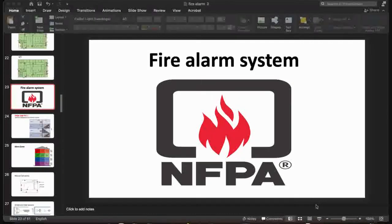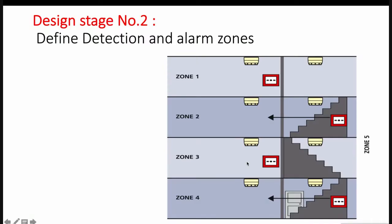This is design stage number two, in which the designer defines the detection and alarm zones. In detection zones, we mean the sensor locations and defining the boundaries of the zone or the fire alarm loop, according to the type of fire alarm detection — addressable or conventional.